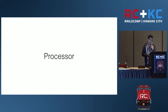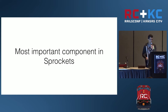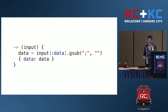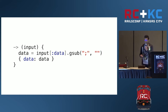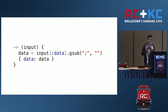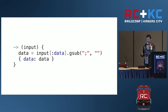Processors are the most important components in Sprockets. They are any callable object that accepts an input hash and returns a hash as metadata. For example, this Ruby code is a valid Sprockets processor — it simply removes semicolons from the end of JavaScript files. It takes an input with some special keys and returns a hash where the data key contains the result of the processor running.